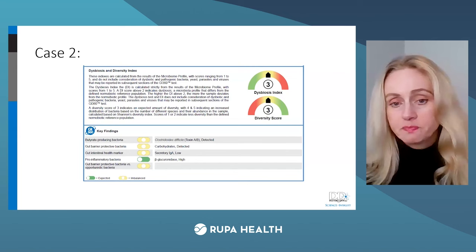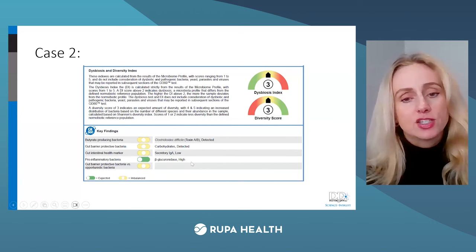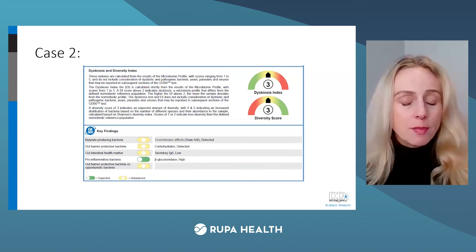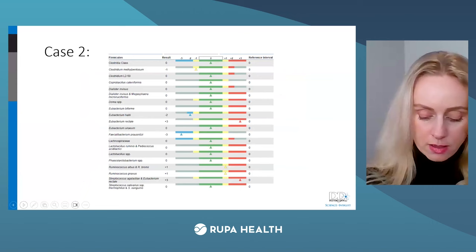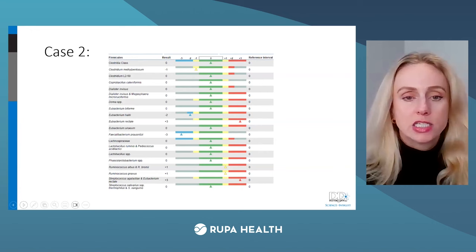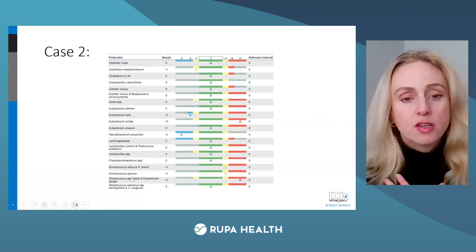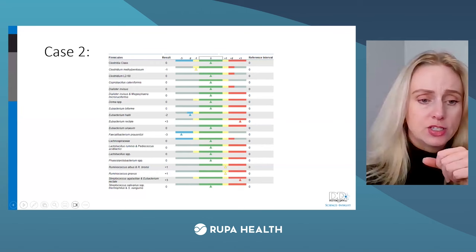You could follow up with serum zonulin for absolute values — fecal zonulin is also available. IgA is low, which is another clue suggesting intestinal permeability. Beta-glucuronidase is too high, so again she needs soluble fiber and vegetables. I would think about estrogen — maybe follow up with HUMAP salivary hormone testing. Looking under the hood of those bacteria: fecal bacteria Faecalibacterium is too low, so we really want to add soluble fiber. Ruminococcus species is too high, which does make me think about intestinal permeability issues.